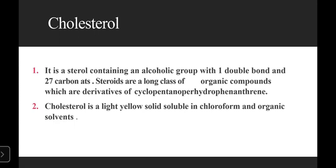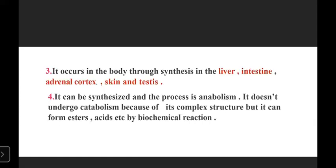It occurs in the body, synthesized in the liver, intestine, adrenal cortex, skin, and testes. You can remember this using the mnemonic ALIST: A is for adrenal cortex, L is for liver, I is for intestine, S is for skin, and T is for testes. It can be synthesized, and this process is called anabolism.